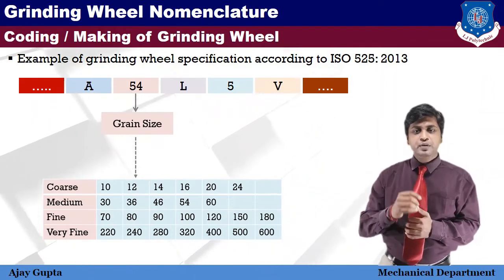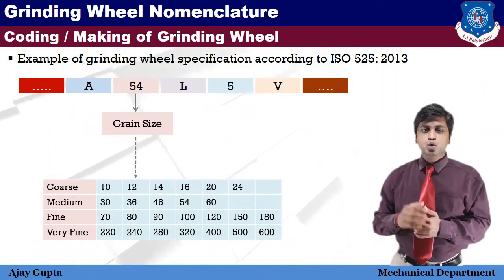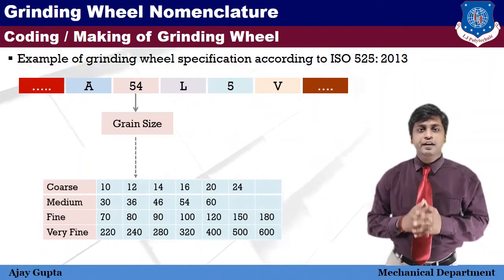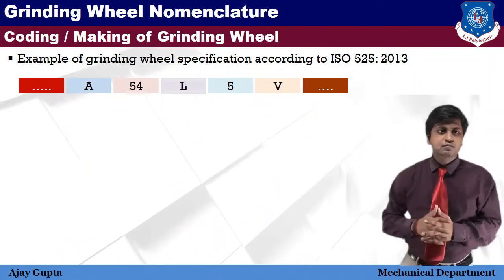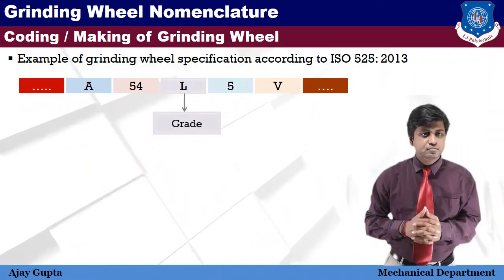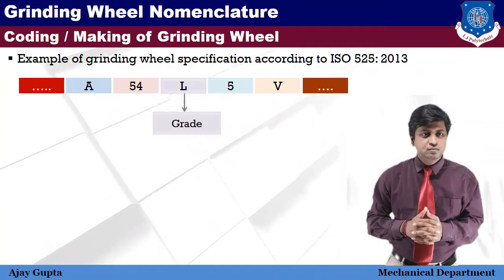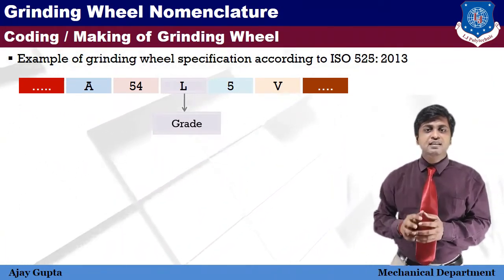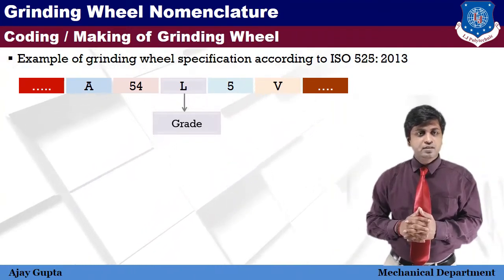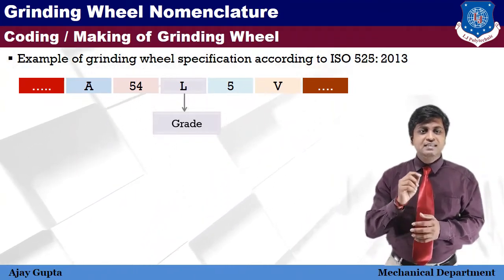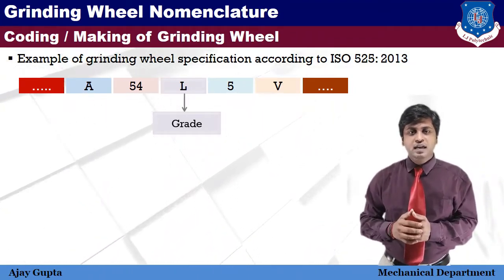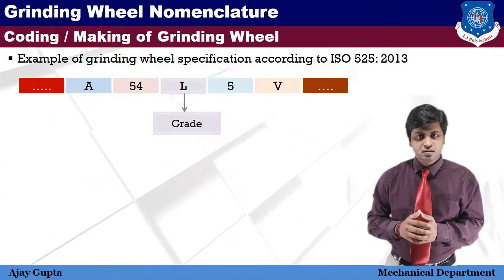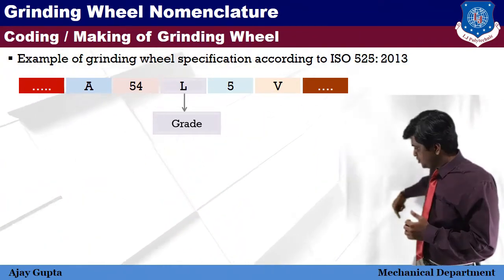Fine and very fine grain sizes are used for precision grinding, whereas coarse and medium grain sizes are used for rough grinding. The fourth symbol is grade. Grade of the grinding wheel indicates the hardness and tenacity of the bond of the abrasive, and is represented by capital letters of the alphabet from A to Z as described in the chart.